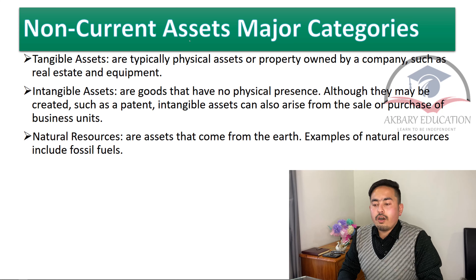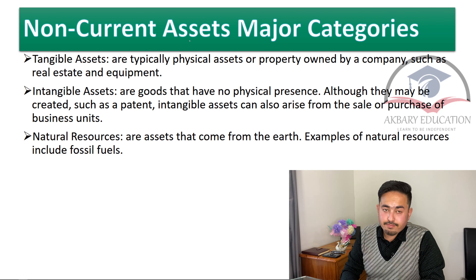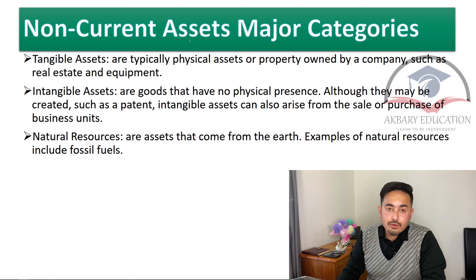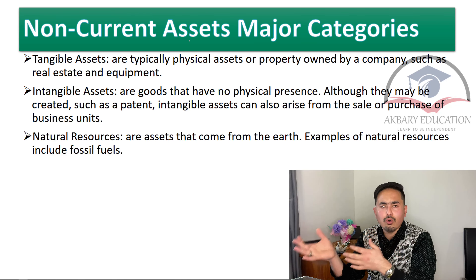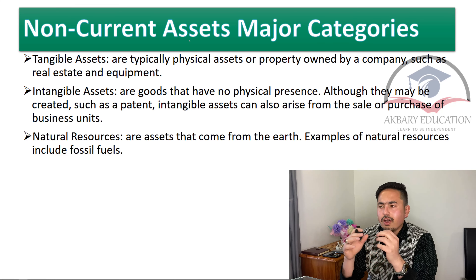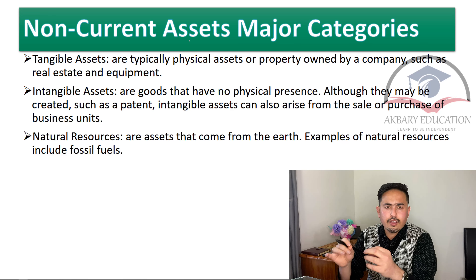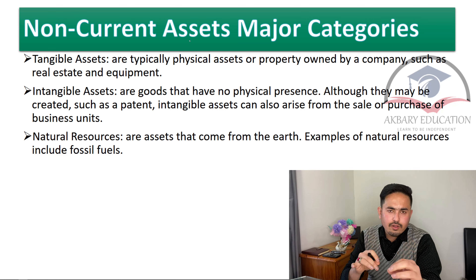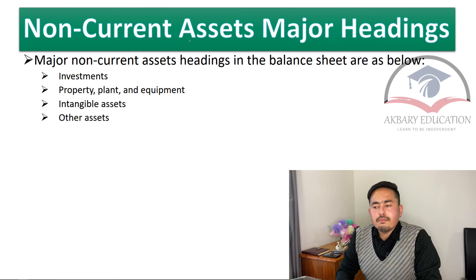Natural resources are assets that come from the earth — such as fossil fuels, gold mines, silver mines, salt, and even forests. Anything sourced from the earth can come under natural resources, which are mostly owned by governments.